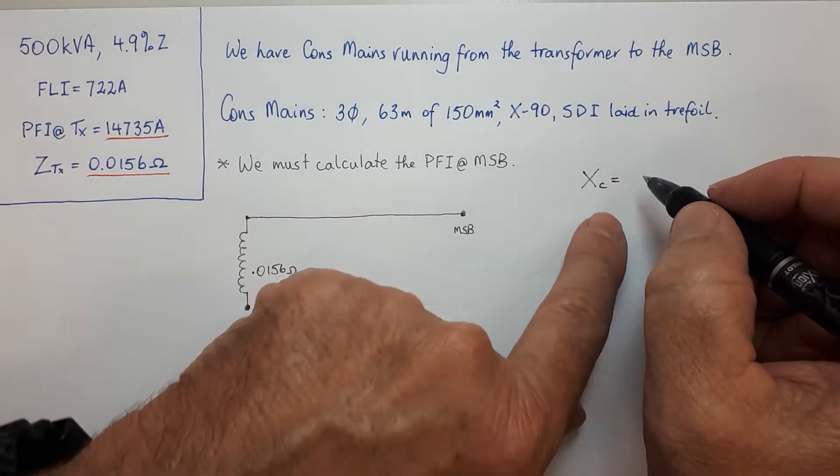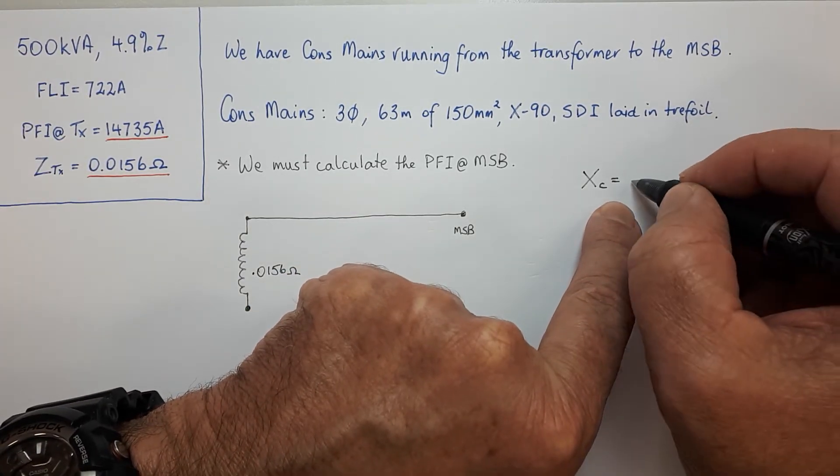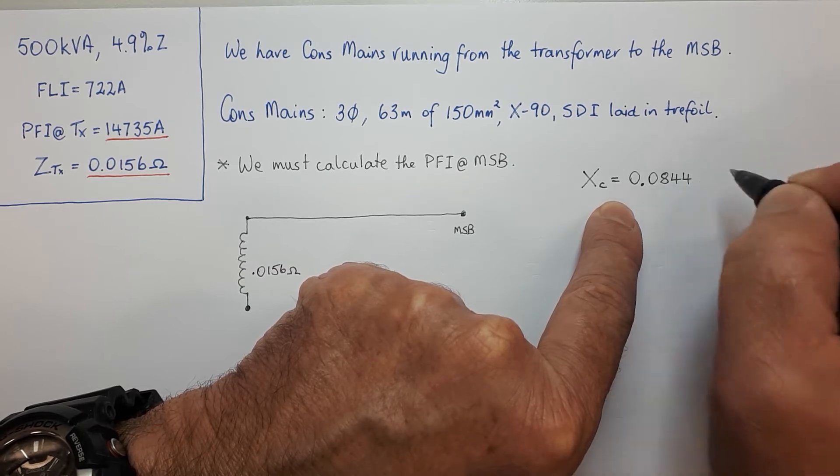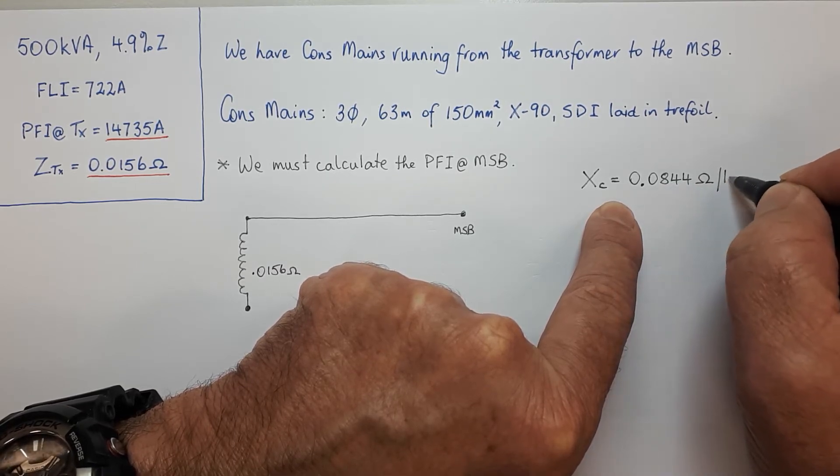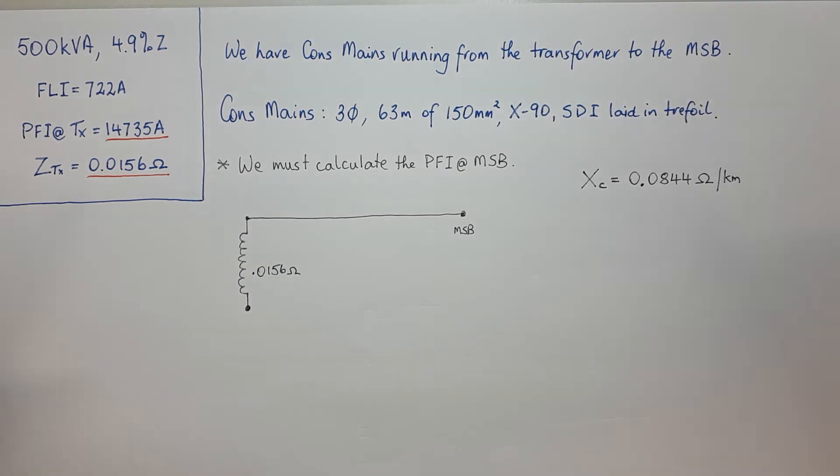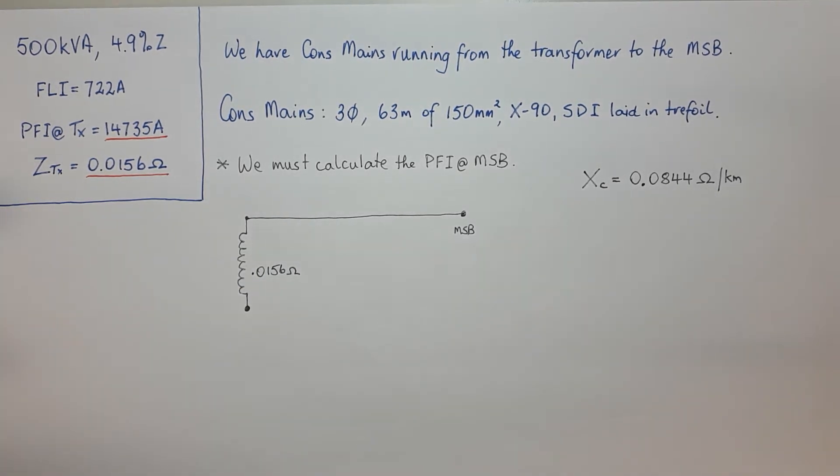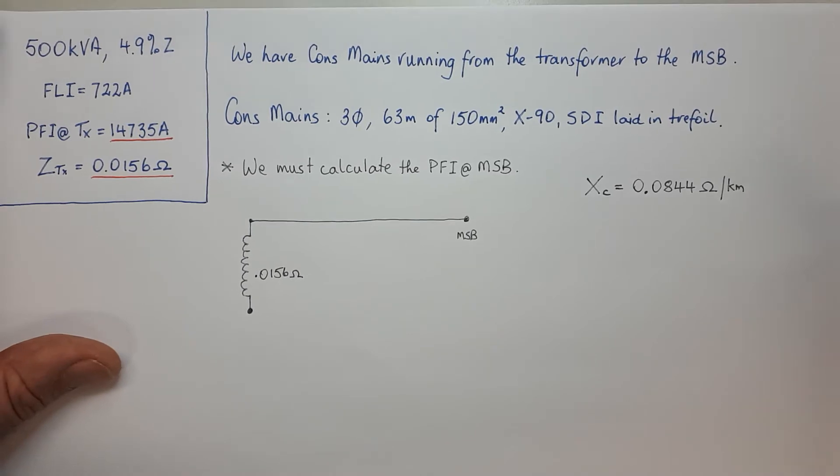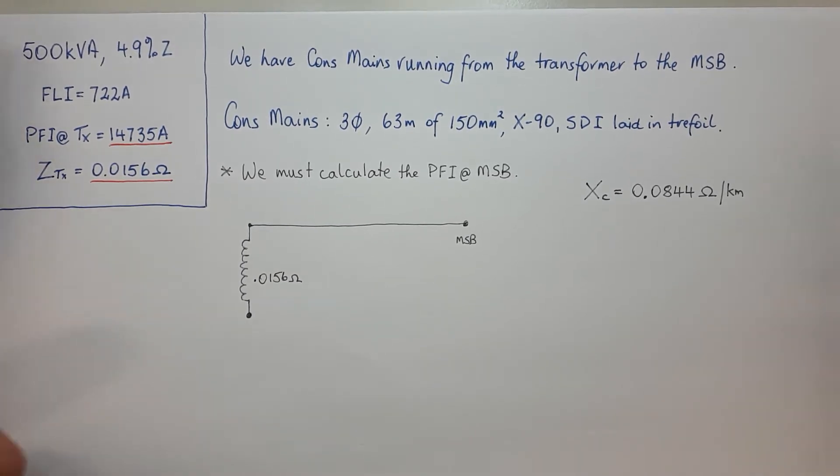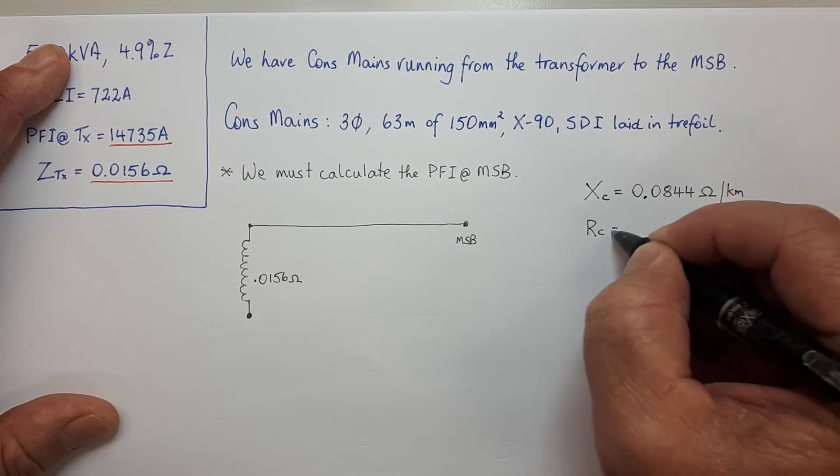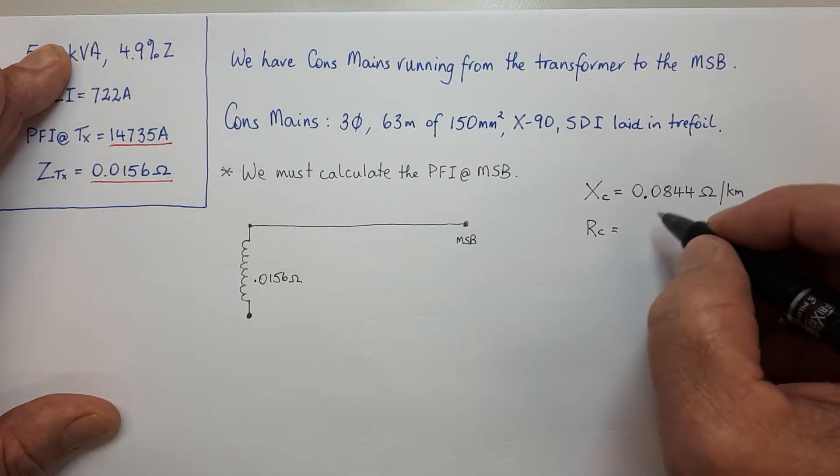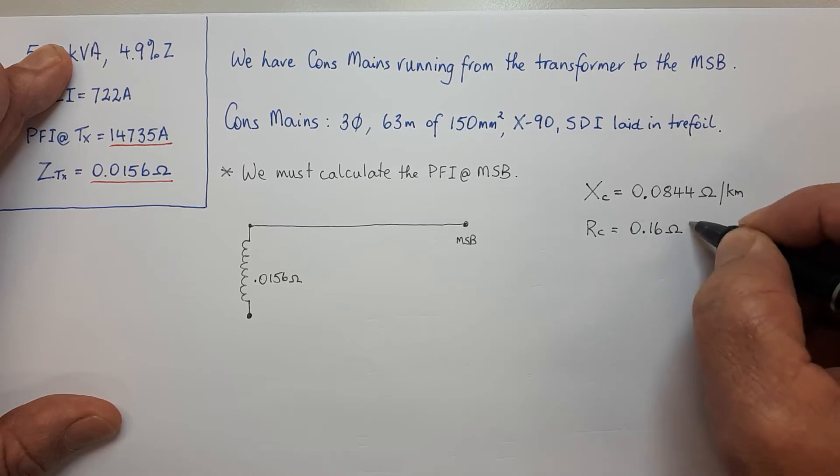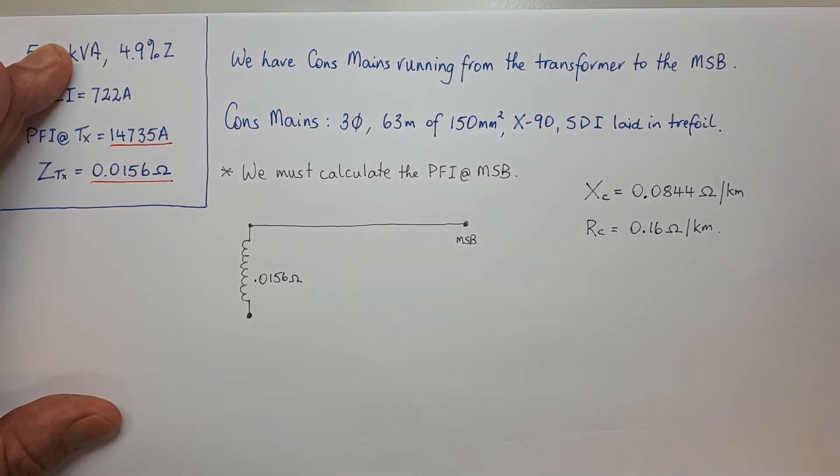This cable has a reactance of 0.0844 ohms per kilometer. We're interested in the reactance because the cable is bigger than 120mm² - that's what we work off. The RC is 0.16 ohms per kilometer. We know it's 63 meters so the calcs are pretty easy.